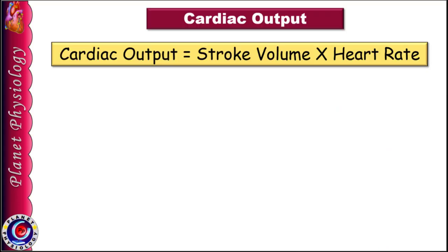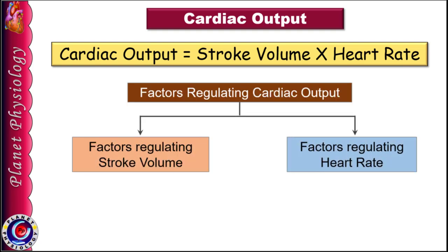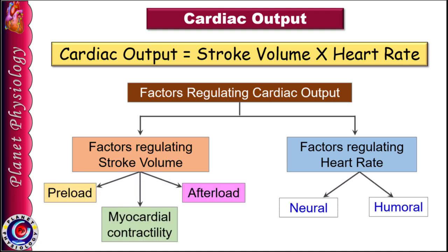Cardiac output is the product of stroke volume and heart rate, and hence cardiac output is regulated either by changing the stroke volume or heart rate or both. Stroke volume is decided by preload, myocardial contractility and afterload, while heart rate is affected by various neural and hormonal factors.